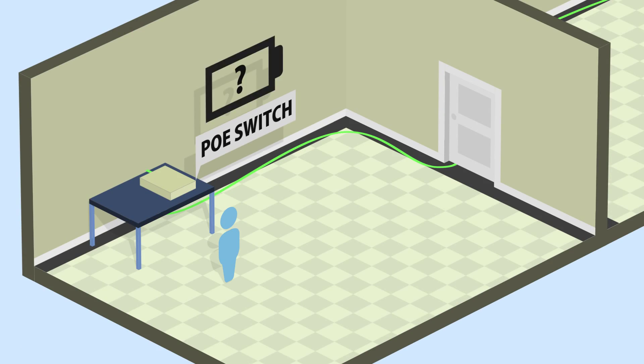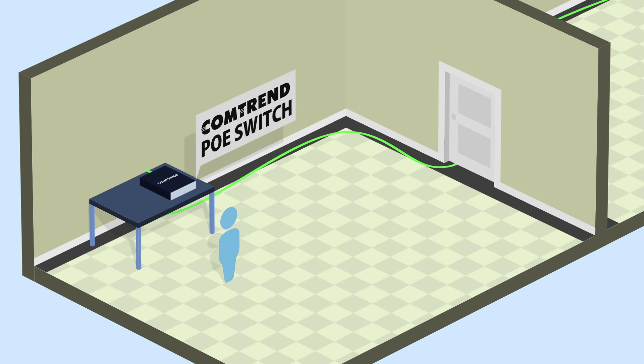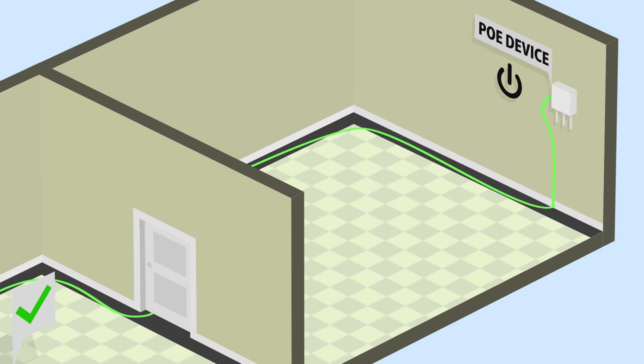Since there is no way to check the remaining power on a standard switch, you must walk over to see if your devices are working. Comtrend's PoE switches allow you to monitor their power budget so you know for sure everything's powered on. It's a simple solution with big benefits.